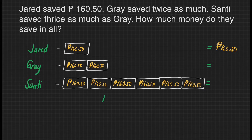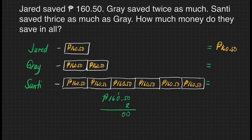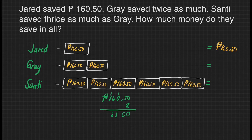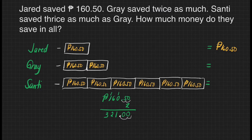Let's do that: 160 pesos and 50 centavos times two. Two times zero is zero. Two times five is ten — write zero, carry one at the top of zero. Two times zero is zero, plus the carried one is one. Two times six is twelve — carry one at the top of one. Two times one is two, plus one is three. We have two decimal places, so that will reflect in our product — placing the decimal point gives us 321. So Gray saved 321 pesos.